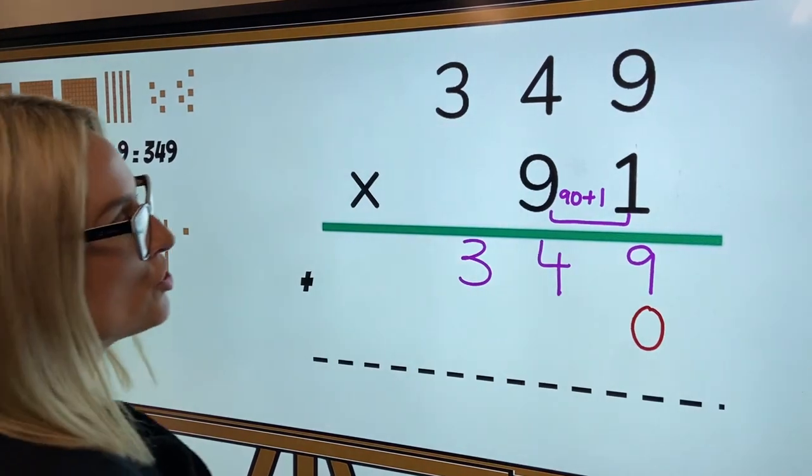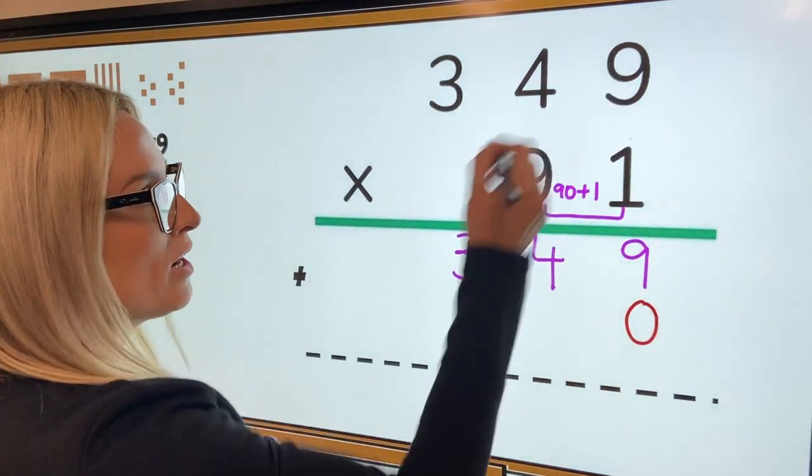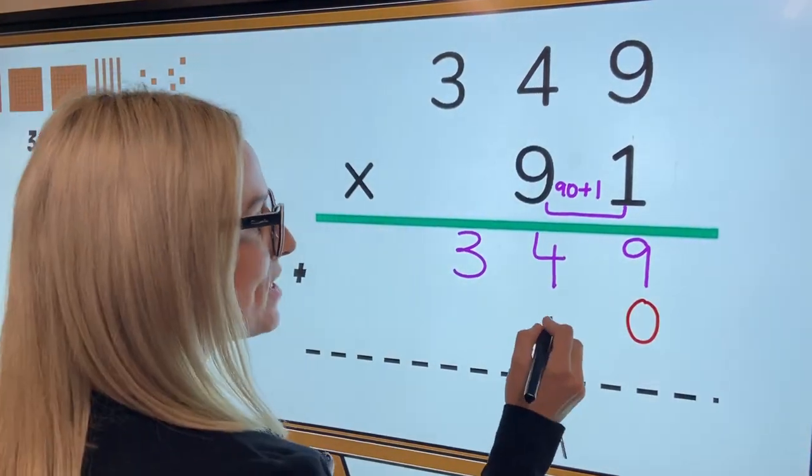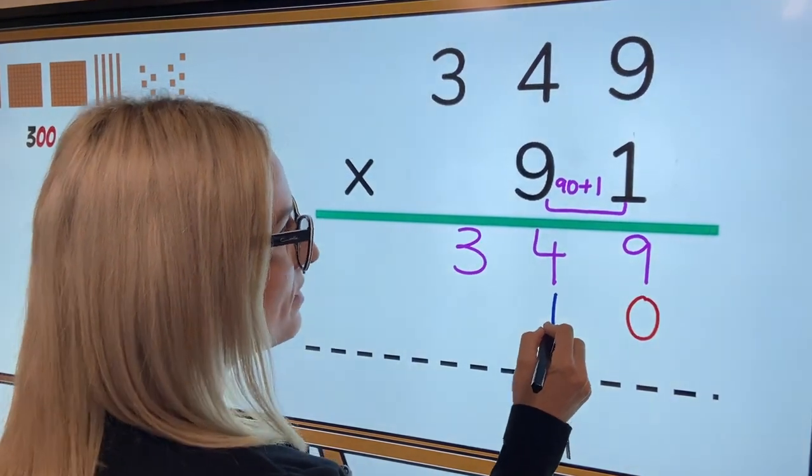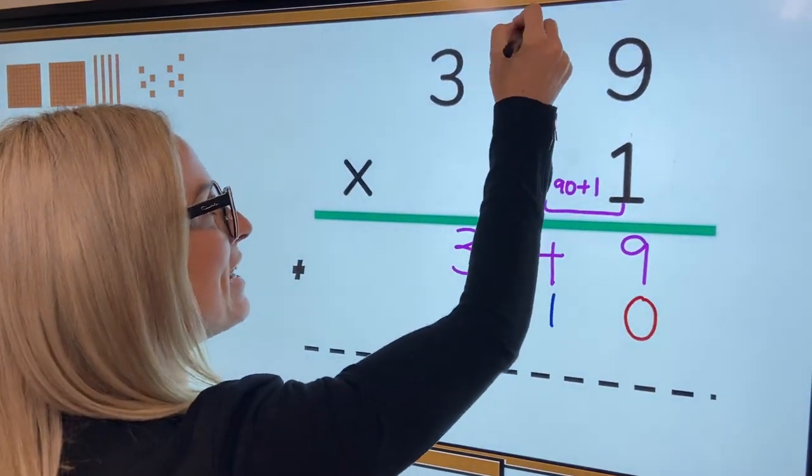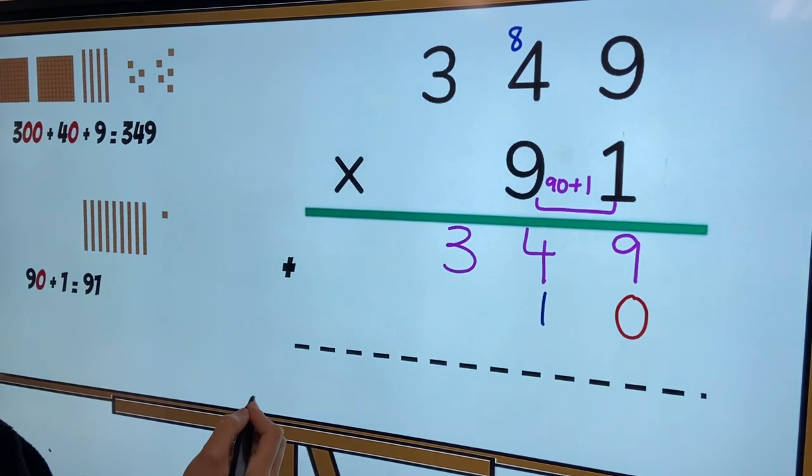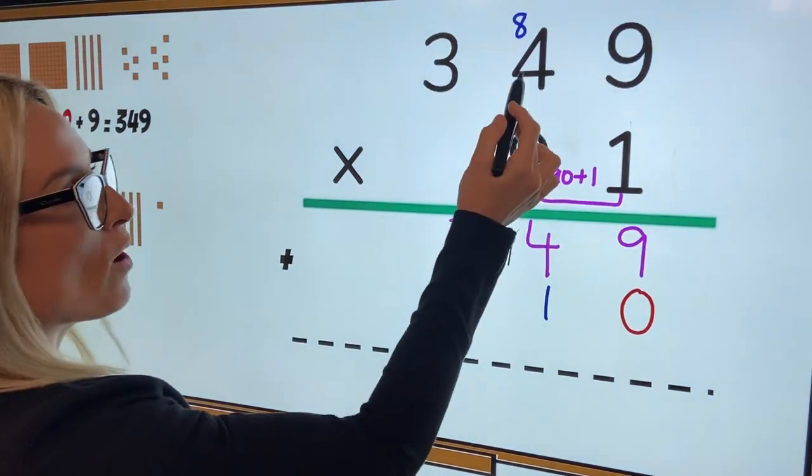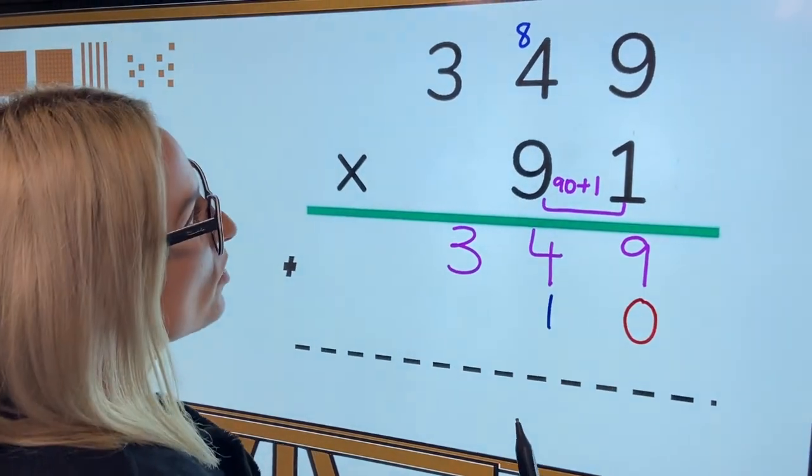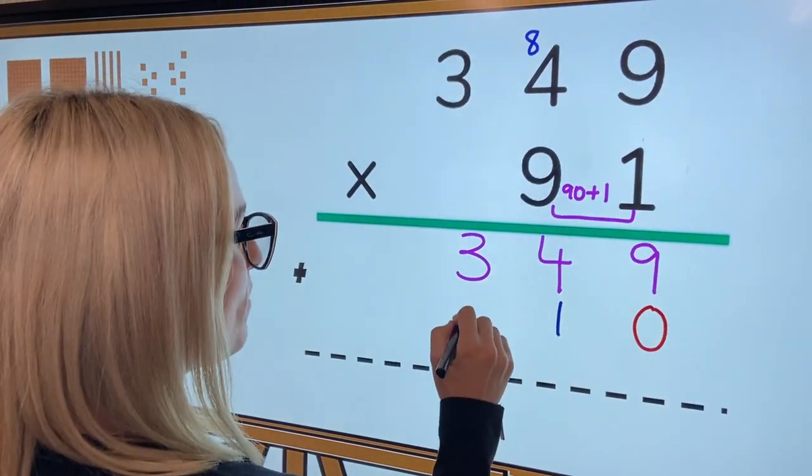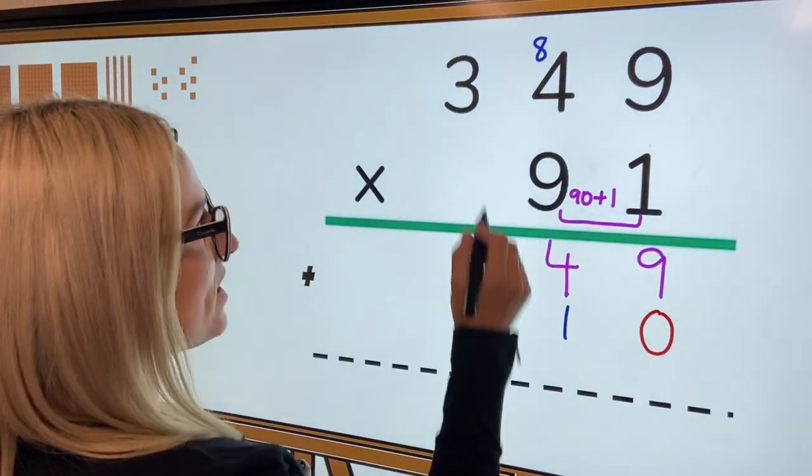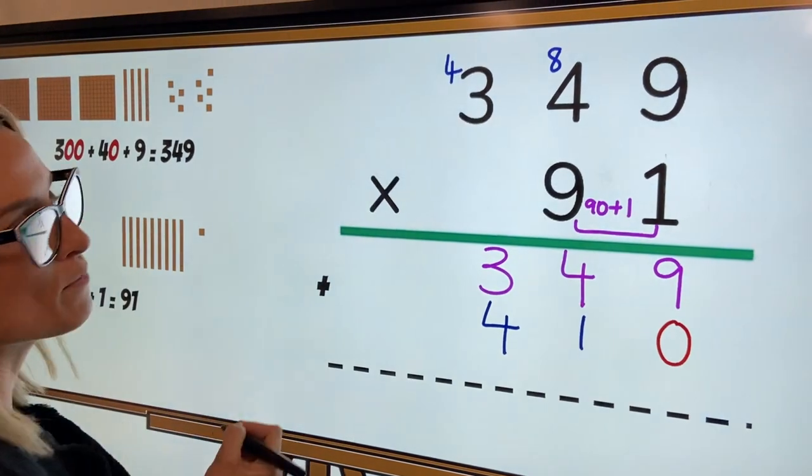Okay. So now what we're going to do is we're going to multiply nine by nine, which is 81. So we put our one down here and we carry our eight here. Now we're going to multiply our nine by four, which we know is 36. And then we're going to add our eight, which is going to be 44. So we put our four down here and we carry our four up the top.